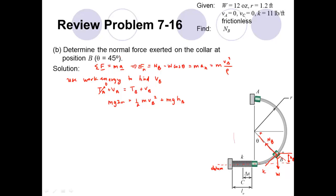We can find the height h_B using geometry. We create a right triangle where the hypotenuse is the radius R. The side adjacent to angle theta uses cosine, so that side equals R cosine theta. The height h_B is then the total radius minus R cosine theta. Substituting this back and solving: distributing mg across the height terms, moving terms to the left side, multiplying by 2, and dividing by m, we get v_B squared equals 2gR times the quantity (1 + cosine theta). Taking the square root gives v_B.